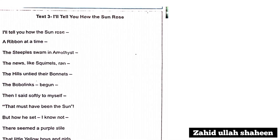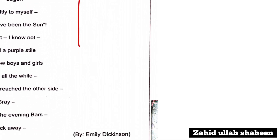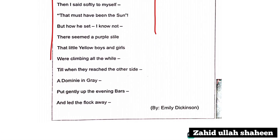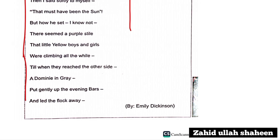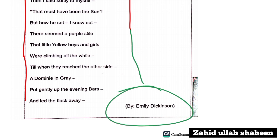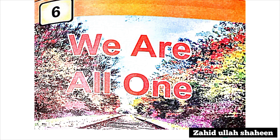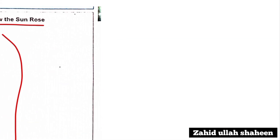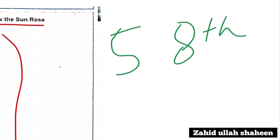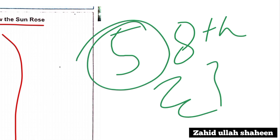The poem discussed is 'I will tell you how the sun rose,' which you can read from the text. This concludes unit number 5, class 8 English grammar section. We will discuss chapter number 6 in the next video. Allah hafiz.